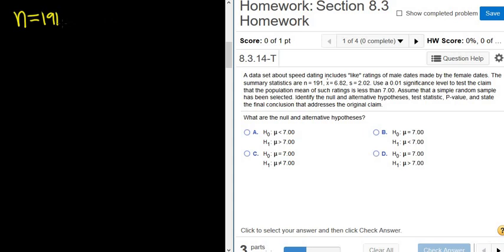X bar, that's the sample mean, that's equal to 6.82. And then S, that's equal to 2.02. That's our sample standard deviation. S is the symbol for sample standard deviation. Use a 0.01 significance level, that's going to be our alpha, to test the claim that the population mean of such ratings is less than 7.